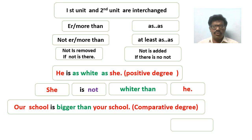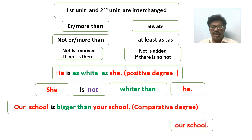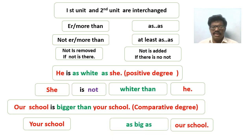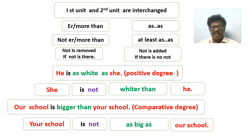Next example: 'Our school is bigger than your school' — it is in comparative degree, we have to change it into positive degree. First, interchange the units: 'your school' is brought first, 'our school' is brought second. Next, in the question there is 'than', so we write 'as...as' — 'as big as' is written. Next, there is no 'not' in the question, so we add 'not'. The answer is: 'Your school is not as big as our school'.